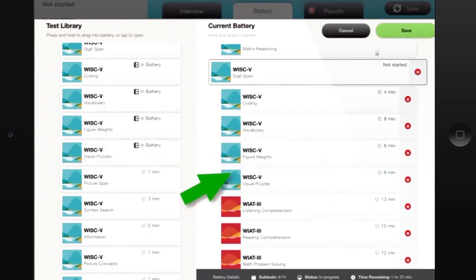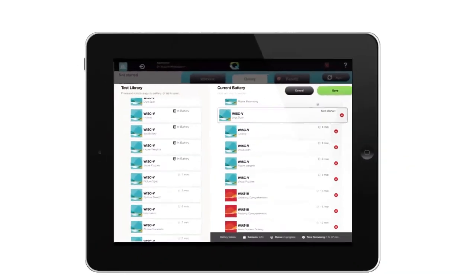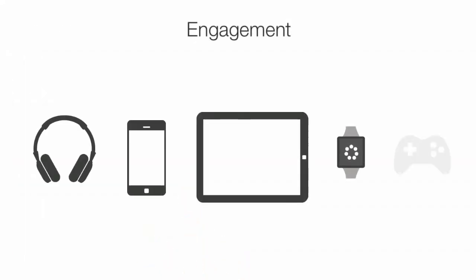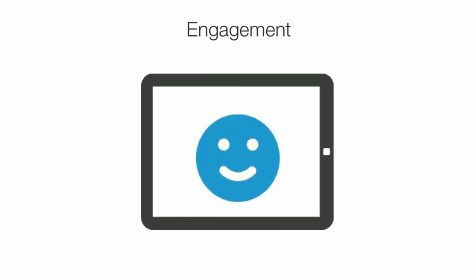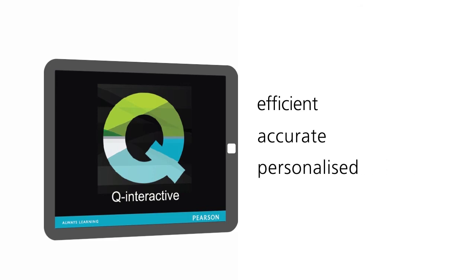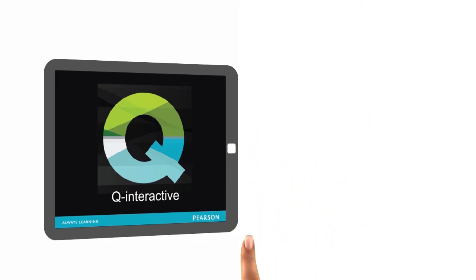Real-time scoring gives you more flexibility than ever by allowing you to quickly personalize sessions based on test data. Q Interactive allows you to immediately select and administer additional tests and subtests. Q Interactive leverages the technology that the digital-first generation knows and enjoys, keeping them engaged and reducing the risk of having their responses affected by boredom or fatigue.